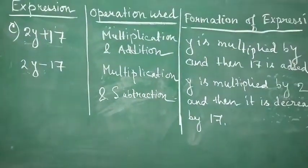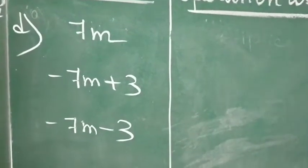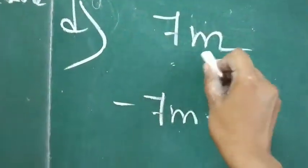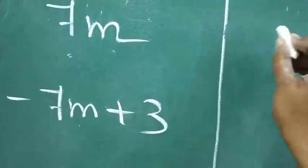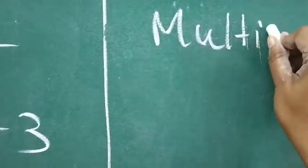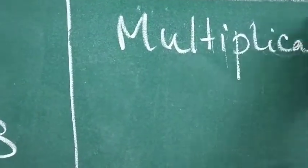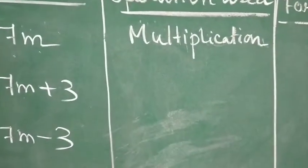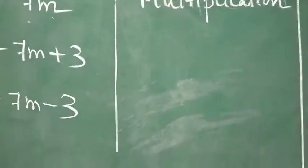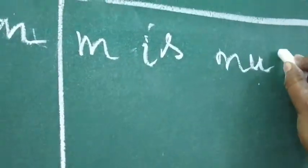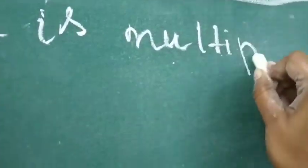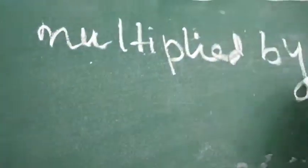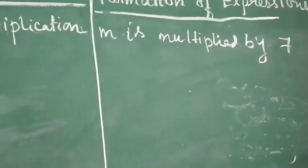Now, next part. Here, see, 7m is there. 7m means 7 into m. So, which operation is used? It is multiplication. And how it is formed? Here, 7 is multiplied by m, or m is multiplied by 7. So, we will write the expression how it is formed — m is multiplied by 7.